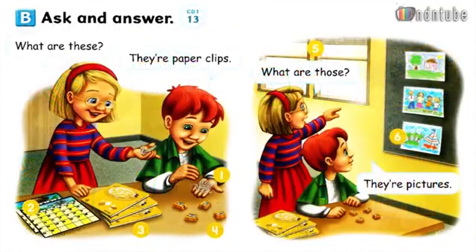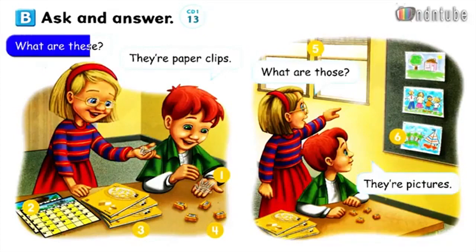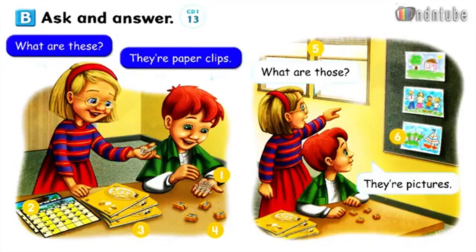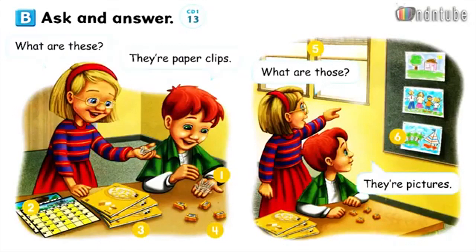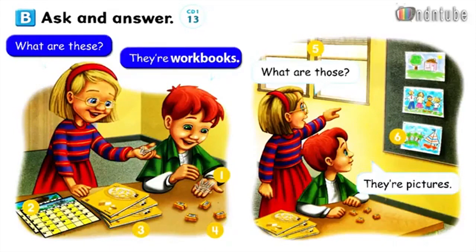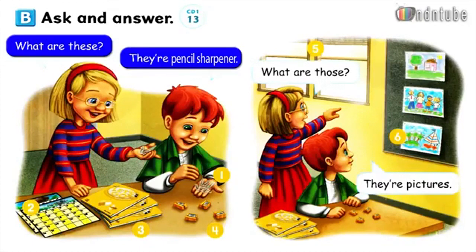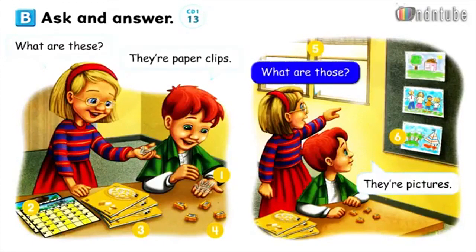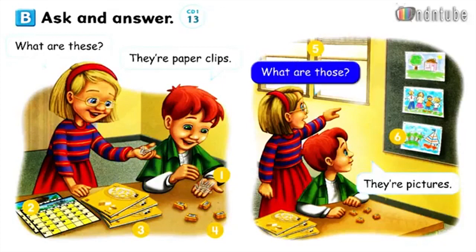Page 8. B. Ask and answer. What are these? They're paperclips. What are those? They're pictures. Number 1: What are these? They're paperclips. Number 2: What are these? They're calendars. Number 3: What are these? They're workbooks. Number 4: What are these? They're pencil sharpeners. Number 5: What are those? They're windows. Number 6: What are those? They're pictures.